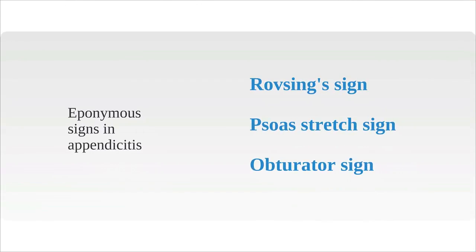There are a couple of eponymous signs in acute appendicitis that it is useful to know about. These include Rovsing's sign, the psoas stretch sign and the obturator sign. In Rovsing's sign, palpation in the left iliac fossa causes maximal pain in the right iliac fossa. The psoas sign is positive when there is painful hip flexion with the patient supine, representing associated inflammation of the psoas sheath. Finally, with the obturator sign, sometimes also known as the cope sign, there is painful hip flexion and internal rotation. Pain with this manoeuvre can indicate an inflamed appendix as the muscle of obturator internus causes pain on contact with the enlarged inflamed appendix.